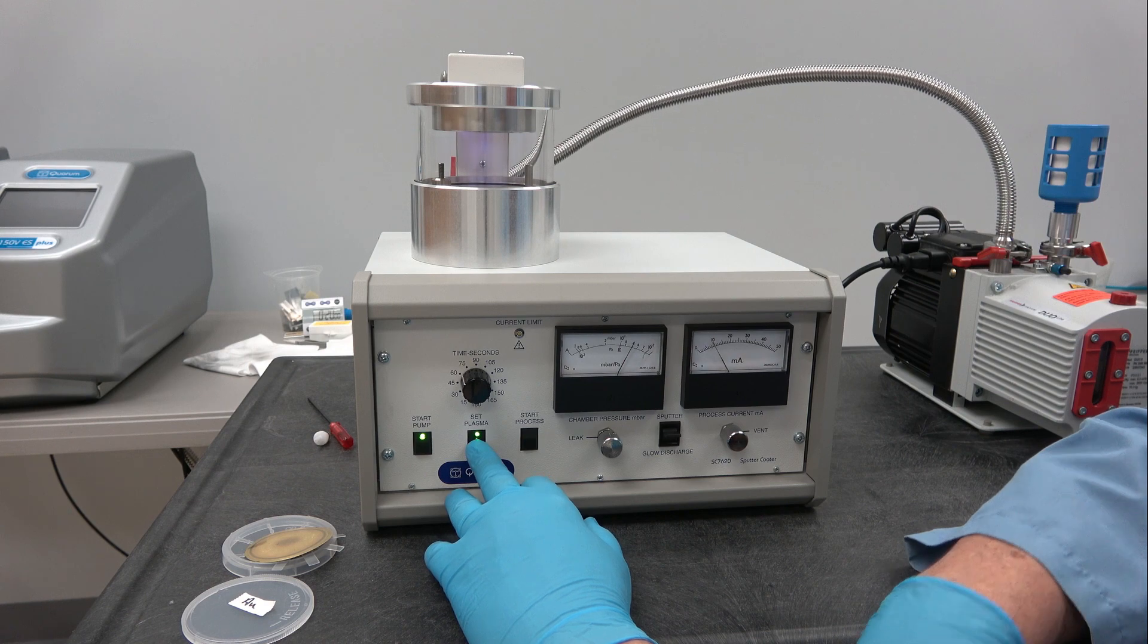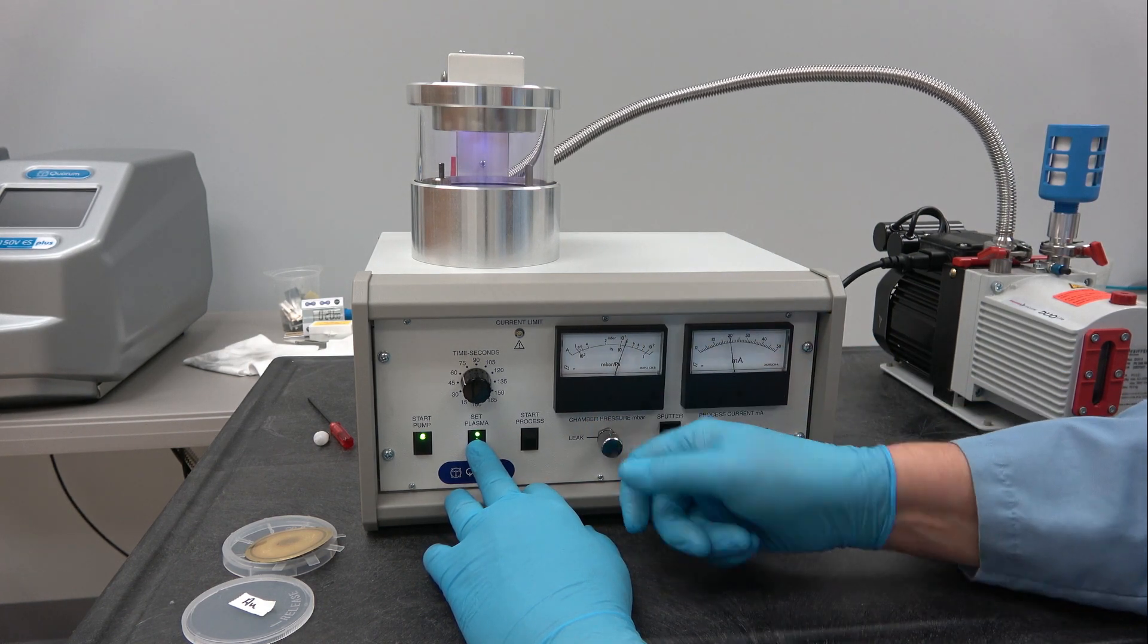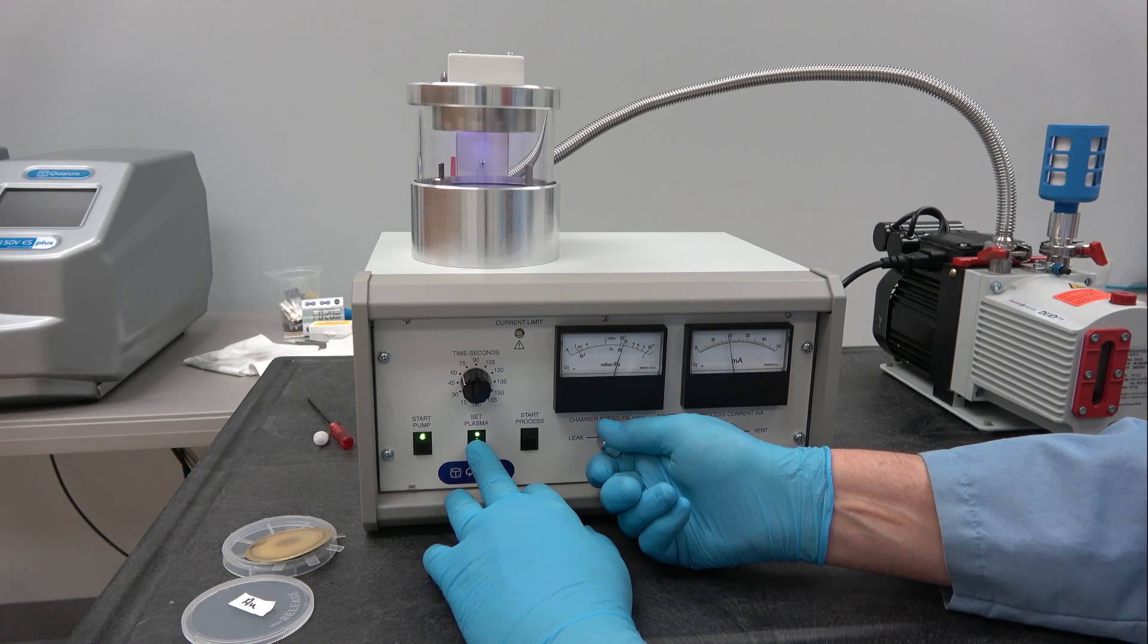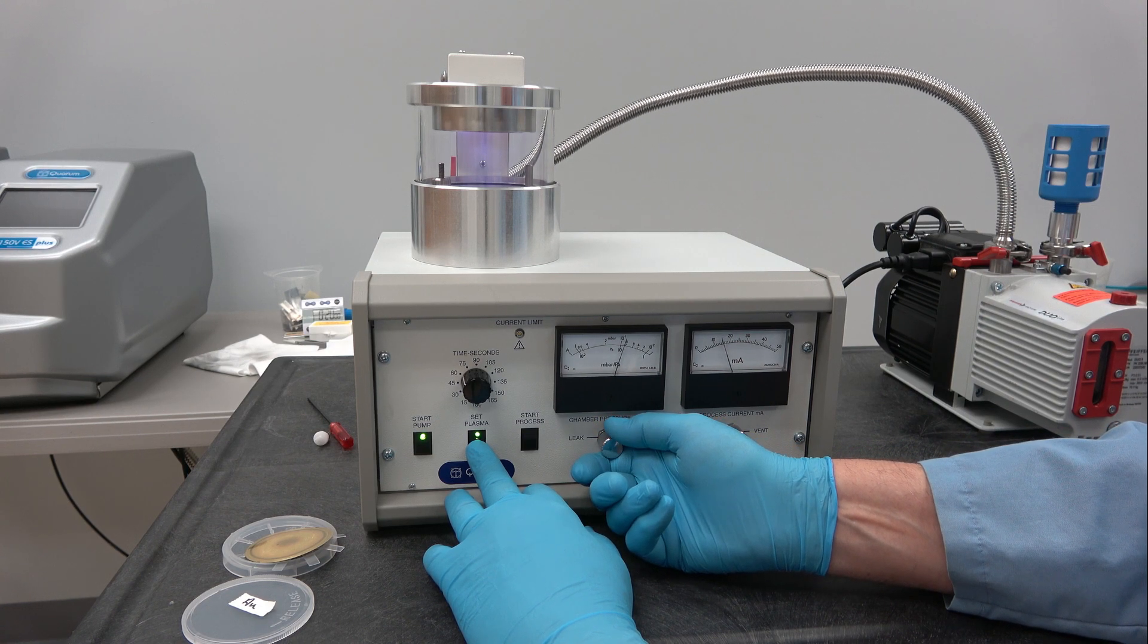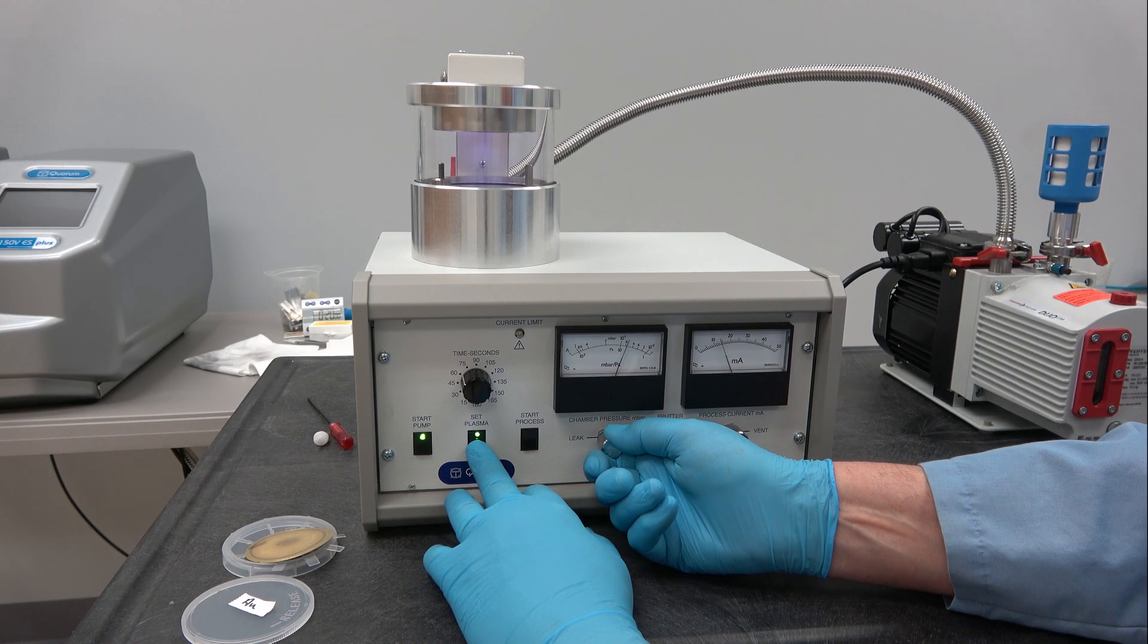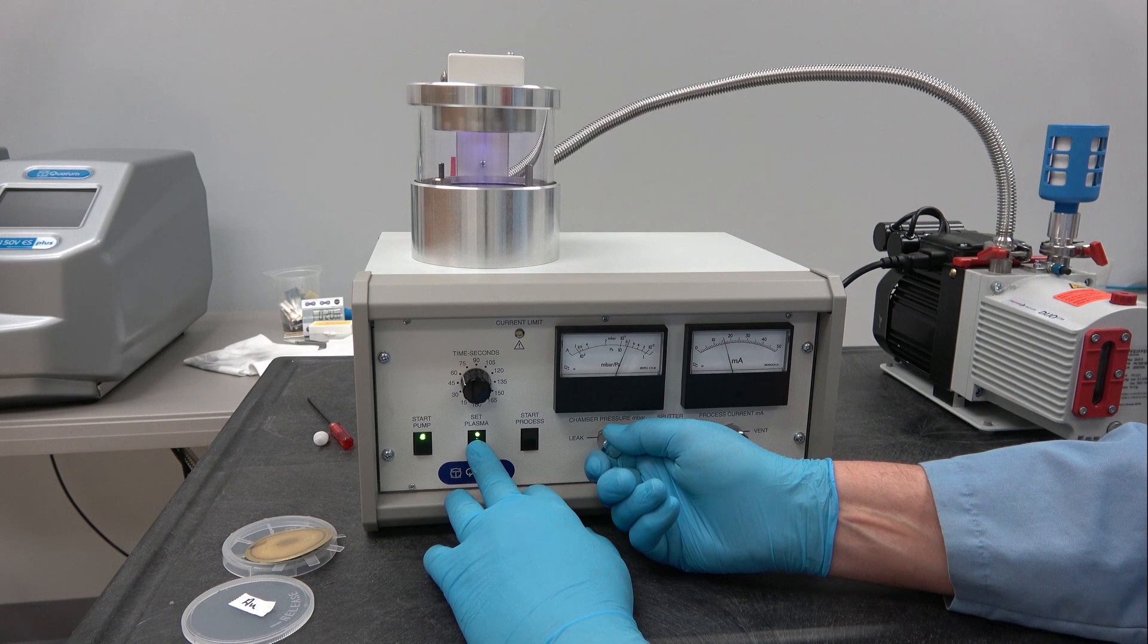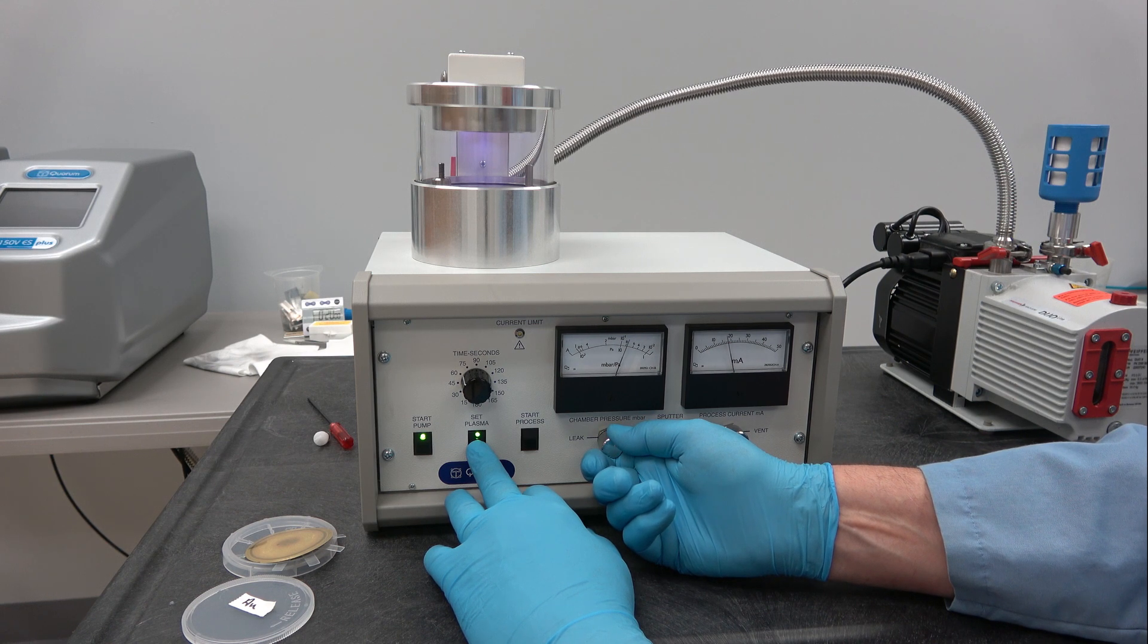We will press the set plasma button. We have a weak plasma. And now we can adjust the gas flow. Less gas, lower current. Higher gas, higher current. The higher the current, the faster the sputter rate is.